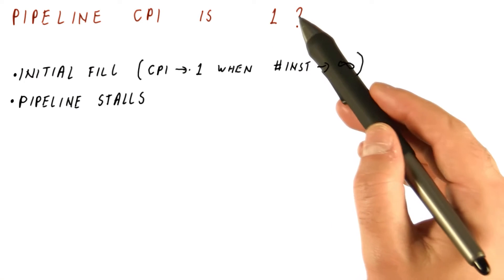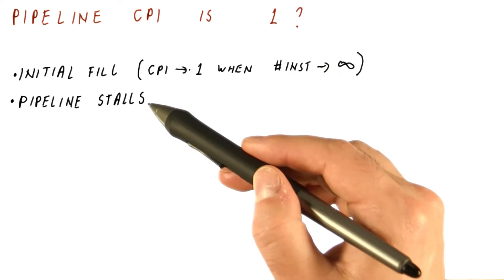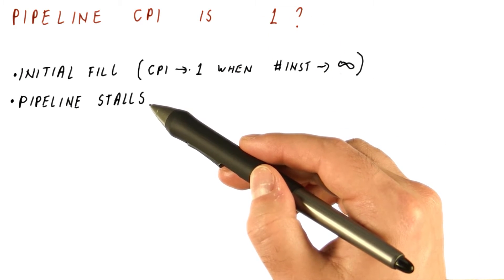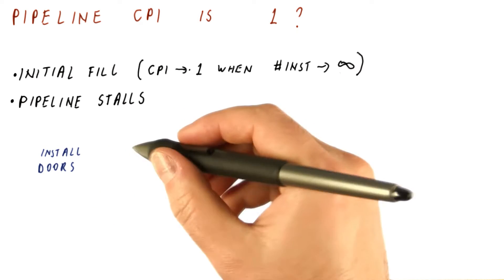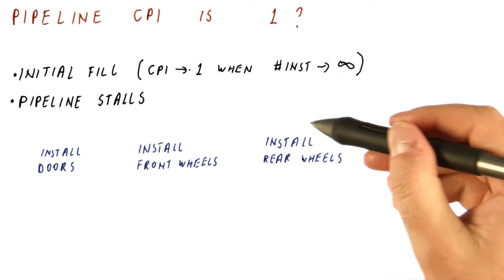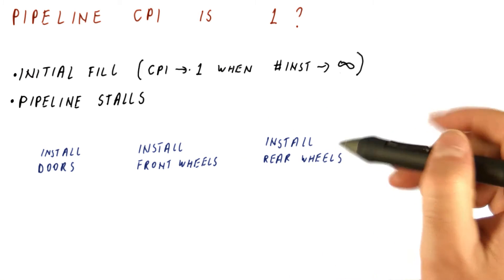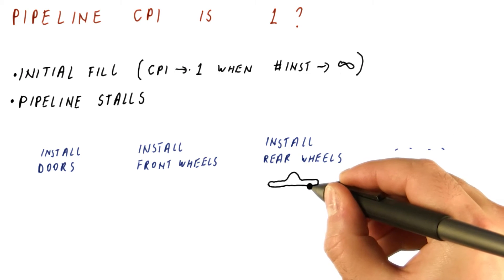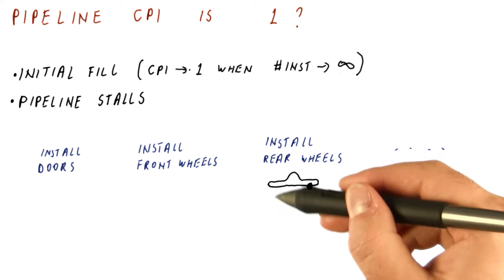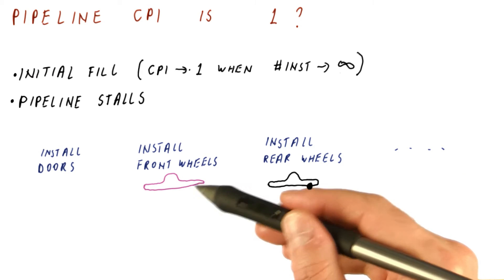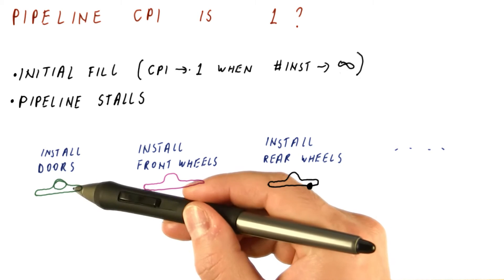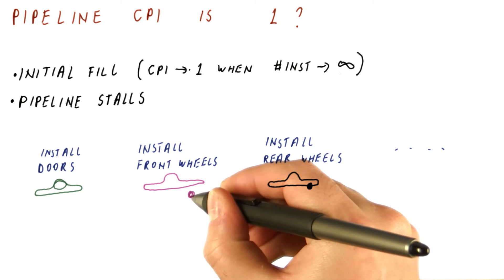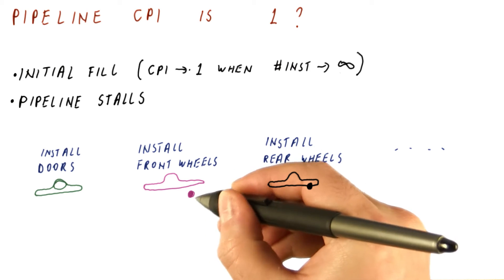The CPI in the steady state is not one also because of pipeline stalls. Think about, for example, a car production line where the first stage is to install the doors, the second stage is to install front wheels. The next stage is to install the rear wheels. And there are many more stages. And let's say that at some point we have a black car here with the front wheels already installed. A purple car here waiting to install the front wheels. And the green car here, still without the doors, it's installing the doors.